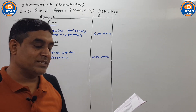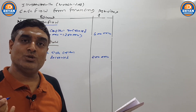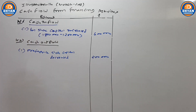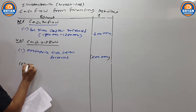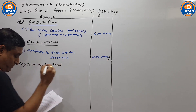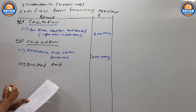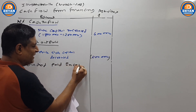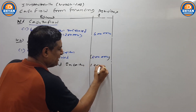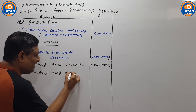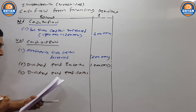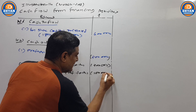Uske baad — debenture ke andar dhyan jaaye — last year bhi 6,00,000, current year bhi 6,00,000 — that means no change, no increase, no decrease. Additional information mein — sabse pehle hai dividend ka payment kiya hai — equity aur preference — that is called financing activities, paise jaayenge, cash goes out. Dividend paid — equity capital, jiski value I think 2,00,000 rupye — paise jaayenge. Uske baad — dividend paid preference share capital, jiski value I think 1,00,000 — yeh bhi cash jaayega, minus karna hai.